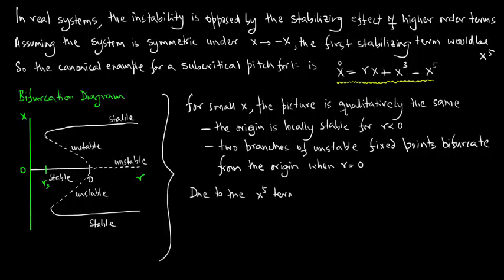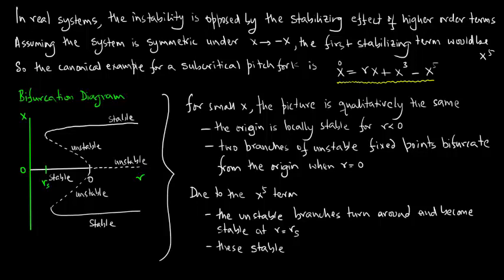Now due to the unstable branches actually turn around and become stable at r equals rs, which is greater than zero.